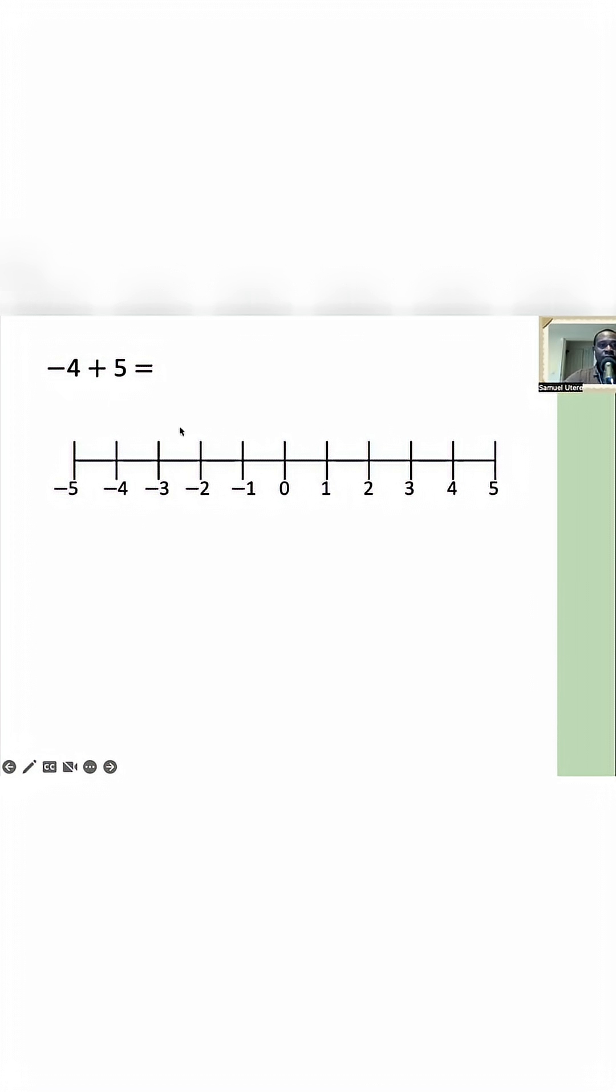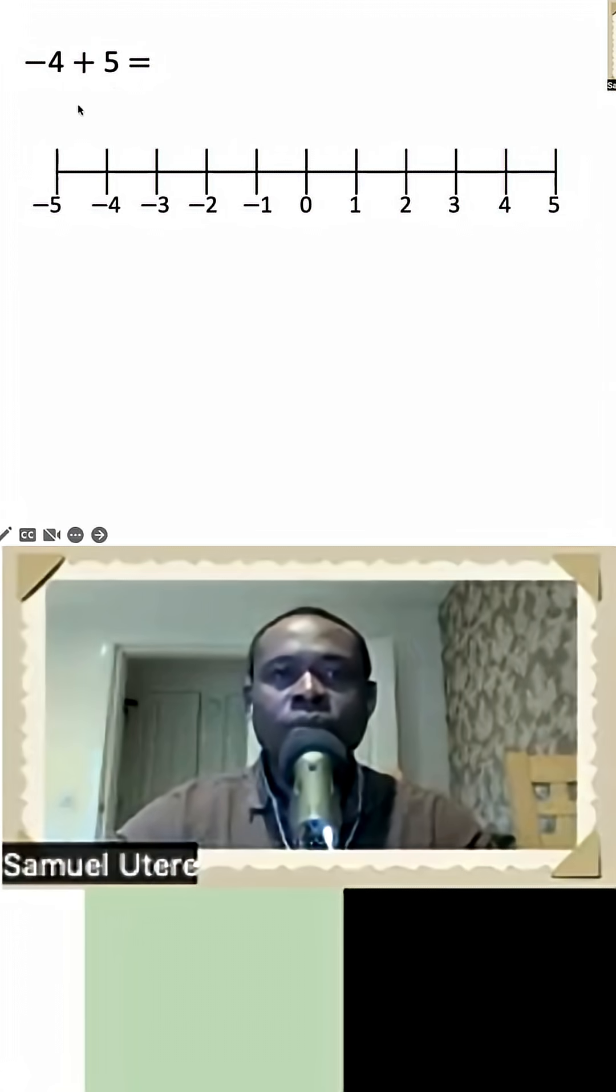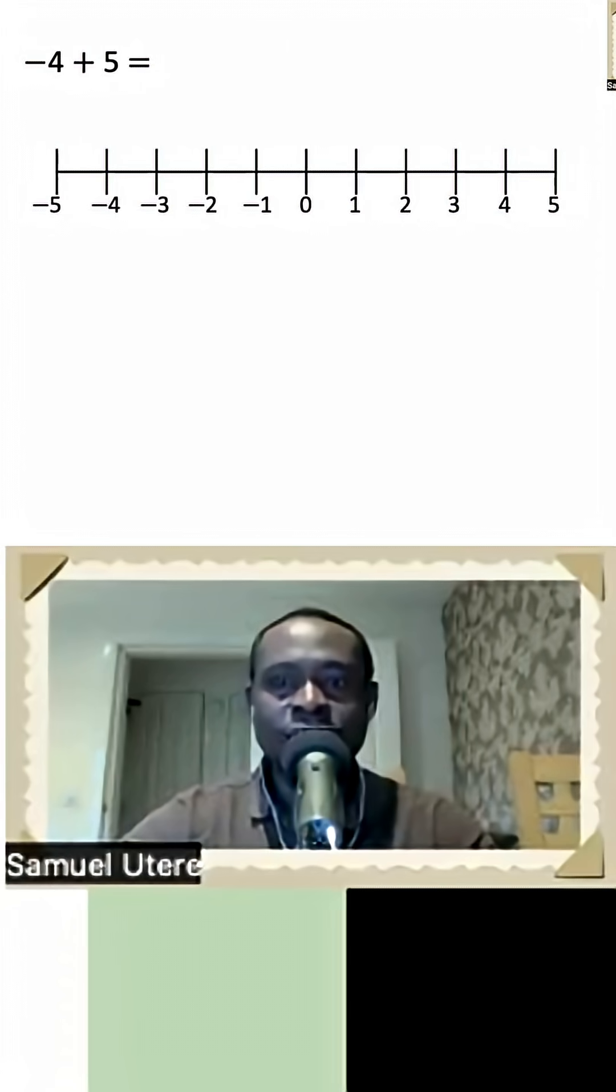Negative 4 plus 5. Remember, our title is doing calculations that cross zero. So from negative 4, how many steps do you have to make to get to zero? Have a think.